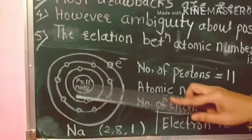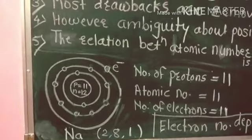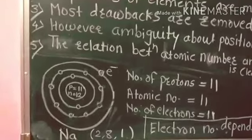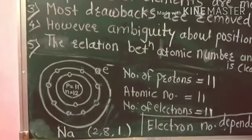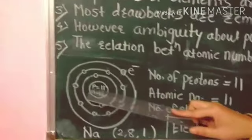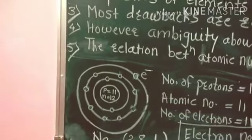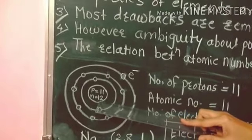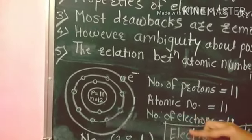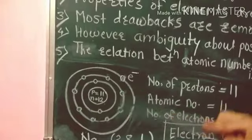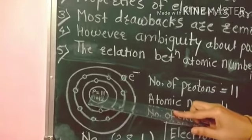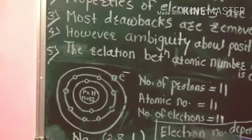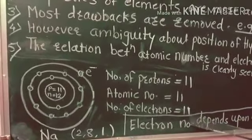The mass number is the sum of the number of protons and number of neutrons. The proton number is 11, so 23 minus 11 equals 12 — the number of neutrons is 12. And since proton number is 11, the number of electrons in sodium is also 11.